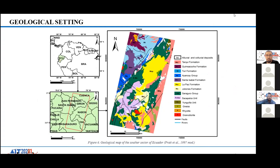The study area is located in South America in the southern part of Ecuador. The stratigraphy is characterized by different units made up of volcanic materials, including rhyolitic and andesitic layers.